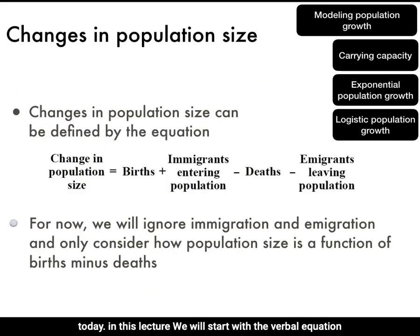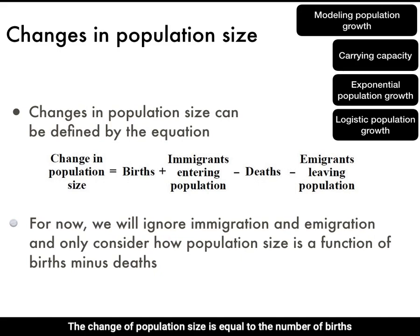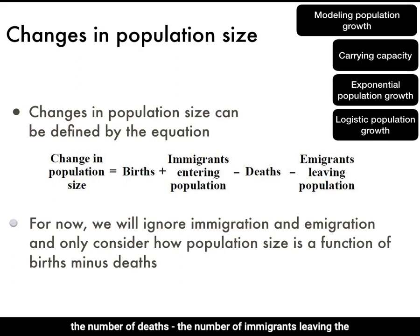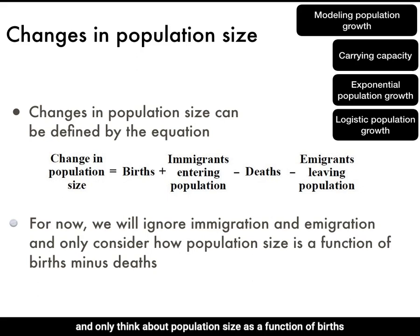We will start with the verbal equation for the factors that cause changes in population. The change in population size equals the number of births plus the number of immigrations entering the population, minus the number of deaths, minus the number of emigrants leaving the population. From here on, we will ignore immigration and emigration and only think about population size as a function of births minus deaths.